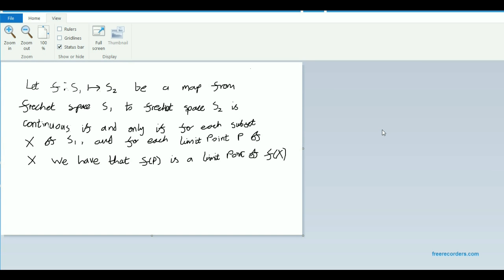if and only if, for every subset X of the Fréchet space S1 and for every limit point P of that subset X, we have that the image F of P under our mapping F is going to be a limit point